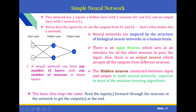A neural network always contains an input layer, a hidden layer, and an output layer. This network has two inputs and one hidden layer with two neurons. H1 and H2 are called hidden neurons, and O1 is called the output neuron. Neural networks are inspired by the structure of biological neural networks in a human brain. There is an input neuron which acts as an interface for all the other neurons to pass the input, and an output neuron which accepts all the output from the different neurons. A neural network can have any number of layers with any number of neurons in those layers.